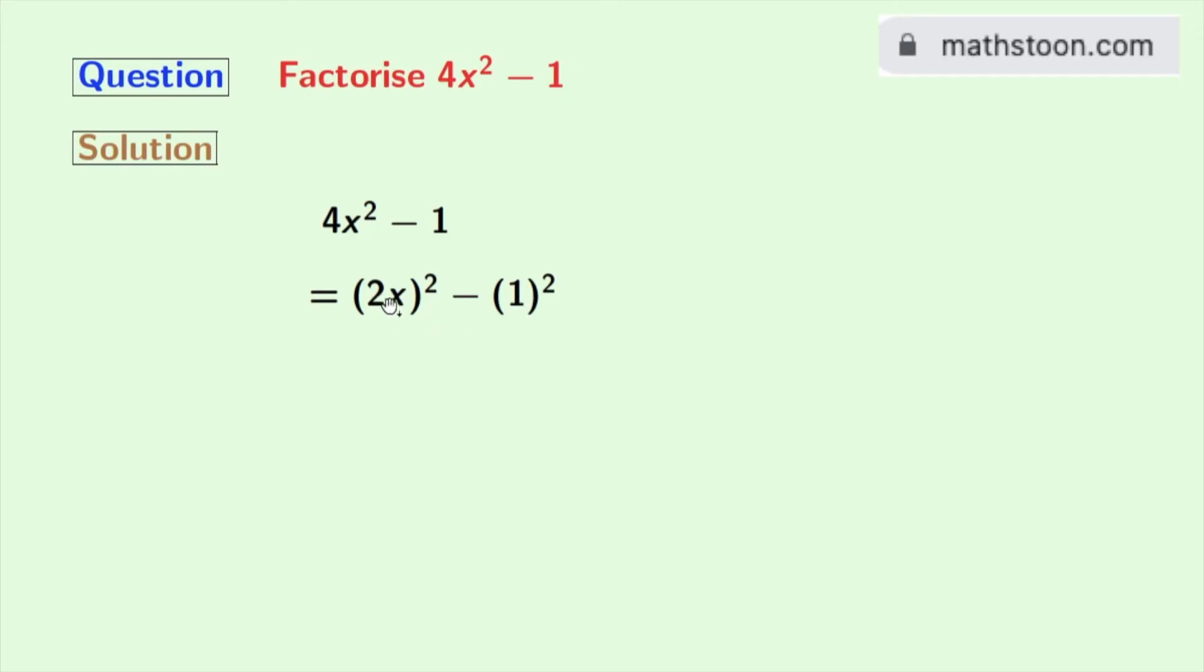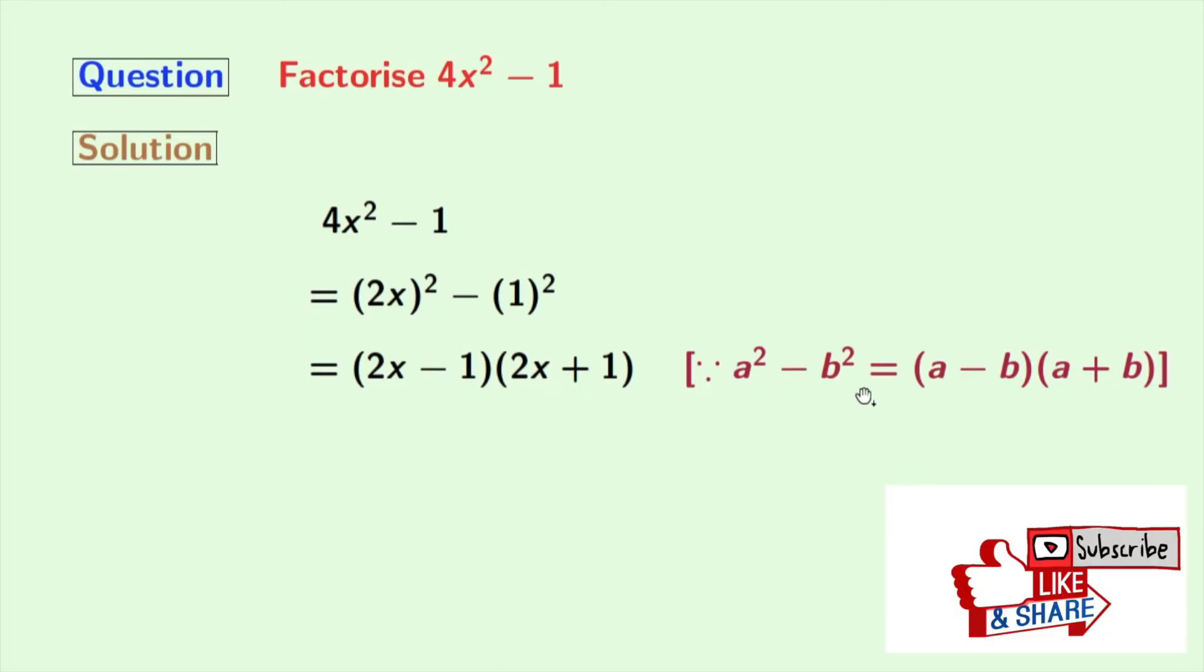Look that this is in the form of a² - b². So we will apply that formula. This formula is given here. Now applying this formula, we get from this (2x - 1)(2x + 1).